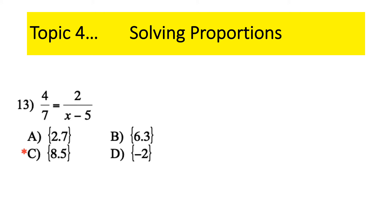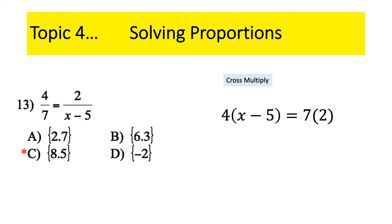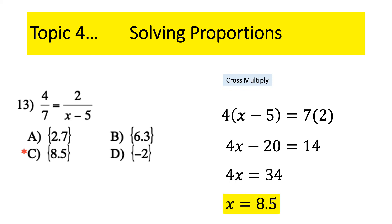New topic — proportions. To solve proportions, we cross multiply: top left with bottom right equals bottom left times top right. So 4 times (x−5) equals 7 times 2. Use the distributive property first: 4x − 20 = 14. Then it's a two-step equation — solve for x. Notice you may get a decimal number, but don't panic. That was topic four, solving proportions.